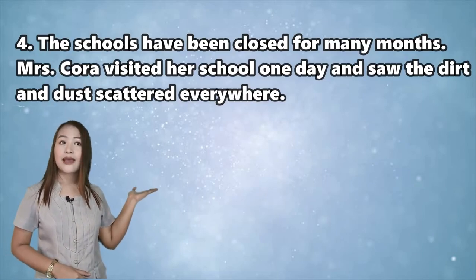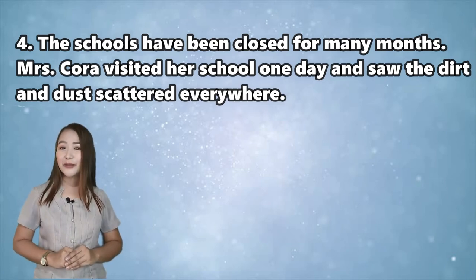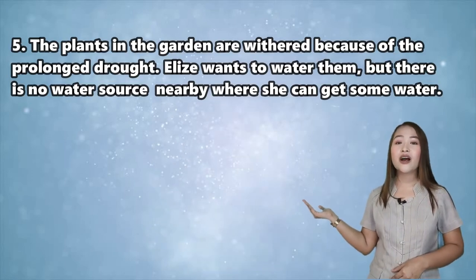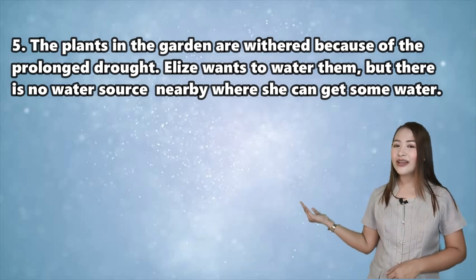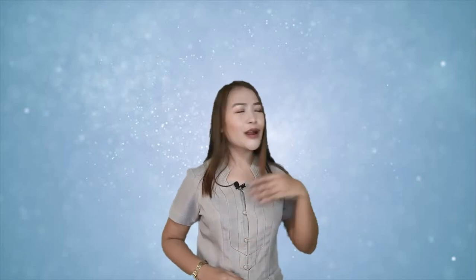Number 4: The schools have been closed for many months. Mrs. Cora visited her school one day and saw the dirt and dust scattered everywhere. Will you give a solution to Ms. Cora's problem? And last, number 5: The plants in the garden are withered because of the prolonged drought. Elise wants to water them but there is no water source nearby. What could be the solution to Elise's problem? I will give you more time to write your answers. Remember, children, there are many ways to solve a problem. Just make sure that your solutions are reasonable and won't harm other people.